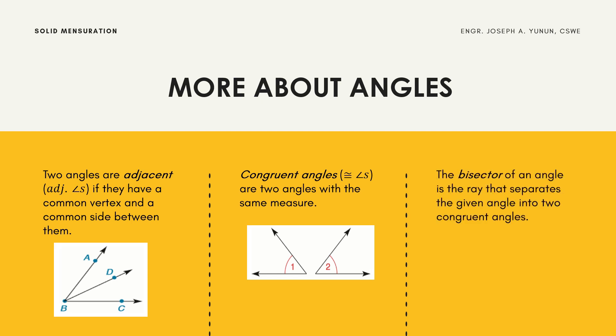The bisector of an angle is the ray that separates the given angle into two congruent angles. As shown in the figure, angle MNQ is bisected by ray NP, so angle MNP and angle PNQ are congruent if they have equal measure, and line segment NP is called the bisector of the angle.